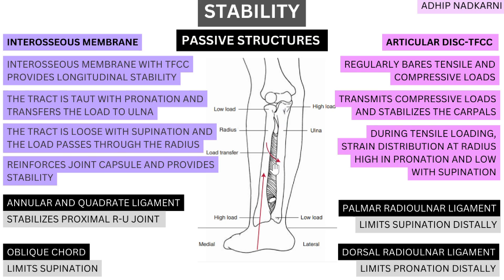That's how forces are transmitted and longitudinal stability is provided. The tract is taut with pronation, which transfers the load to the ulna from the radius. The opposite happens in supination — the tract becomes loose and the load passes predominantly through the radius. When the radio-ulnar joint is in neutral position, 93% of forces are transmitted through the ulna and 7% through the radius. The interosseous membrane also reinforces the joint capsule and provides stability at the radio-ulnar joint.